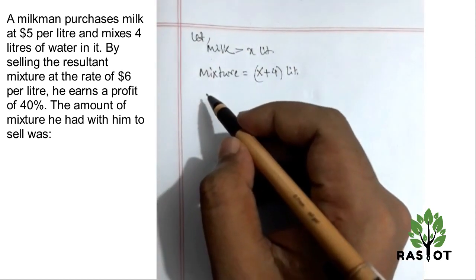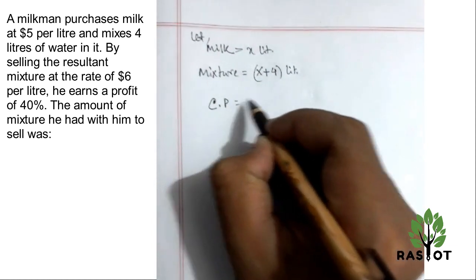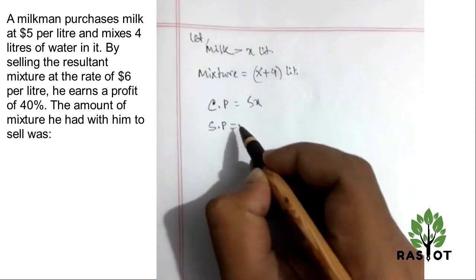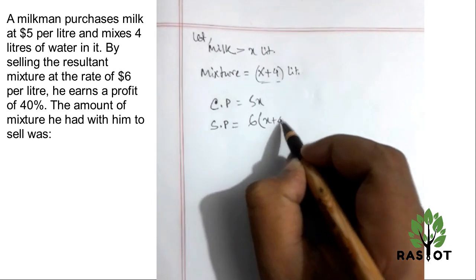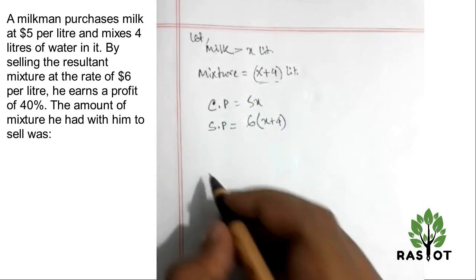So he buys at $5 per liter, so the cost price is 5x. The selling price is $6 per liter for the mixture, right? So 6 into (x+4) is the selling price. And he makes a profit of 40 percent.